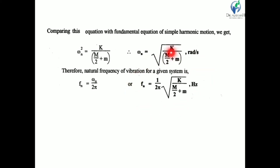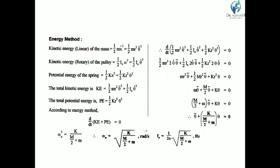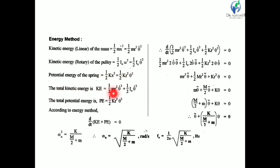Now we derive the same equation using the energy method. The linear kinetic energy of mass is ½mx-dot², which equals ½mr²·theta-dot². The kinetic energy of the pulley (rotary motion) is ½I_O·theta-dot². The potential energy of the spring is ½kx² = ½kr²·theta². So total kinetic energy is ½mr²·theta-dot² + ½I_O·theta-dot², and total potential energy is ½kr²·theta².